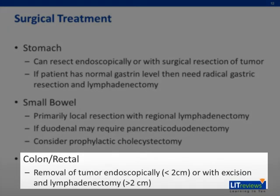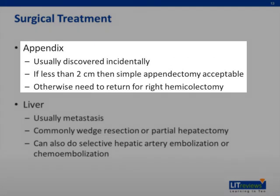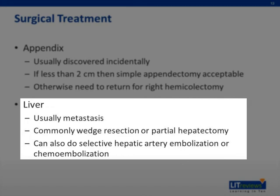In the colon or rectum, endoscopic or local excision is acceptable and depends on the size of the tumor. The appendix is rather unique as carcinoid is commonly diagnosed incidentally during an appendectomy. If the tumor is less than two centimeters, does not involve the meso-appendix or base of the appendix, then a simple appendectomy is acceptable; otherwise, a formal right hemicolectomy should be performed. Carcinoid in the liver is treated with either wedge resections or partial hepatectomy, although selective embolization can be an acceptable alternative.